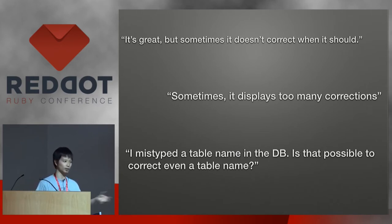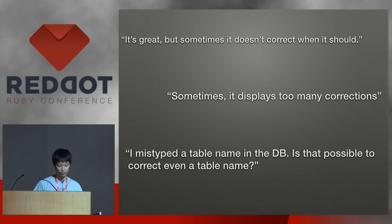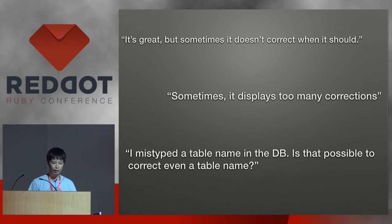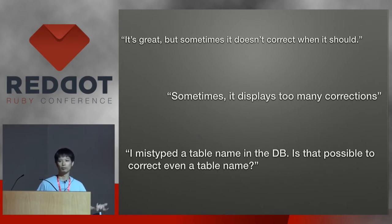Sometimes, for example, with Rails path helpers, you type something like API something path, and it's going to search a lot of things. Another example: I misspelled a table name in the database, and then DidYouMean just doesn't suggest it. This is actually interesting, because DidYouMean is designed to work with NameError and NoMethodError. But if you type a column name or table name, then DidYouMean doesn't actually suggest anything.